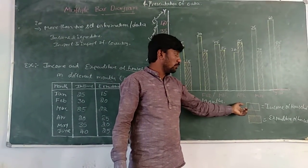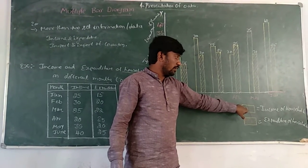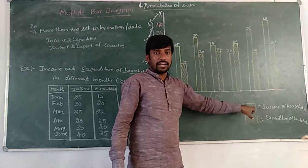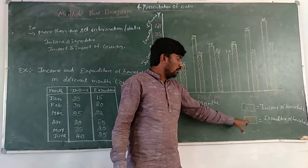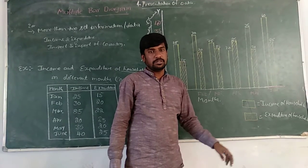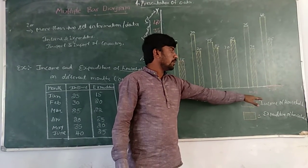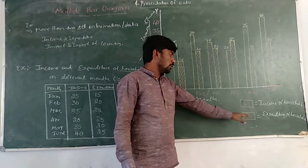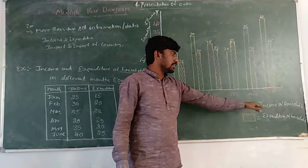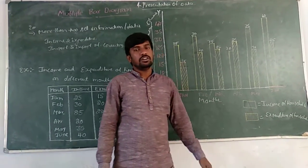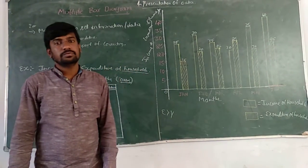Finally, you have to draw the legend to show what each bar represents. The empty rectangular bar is representing the income of the household. The rectangular bar with a cross line is representing the expenditure of the household. This is the multiple bar diagram. Thank you.